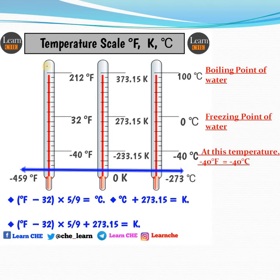Here you can see three temperature scales: degree Fahrenheit, Kelvin, and degree Celsius. Whenever we have to say temperature, we always say degree Fahrenheit, degree Celsius. We do not say degree Kelvin, we say only Kelvin.